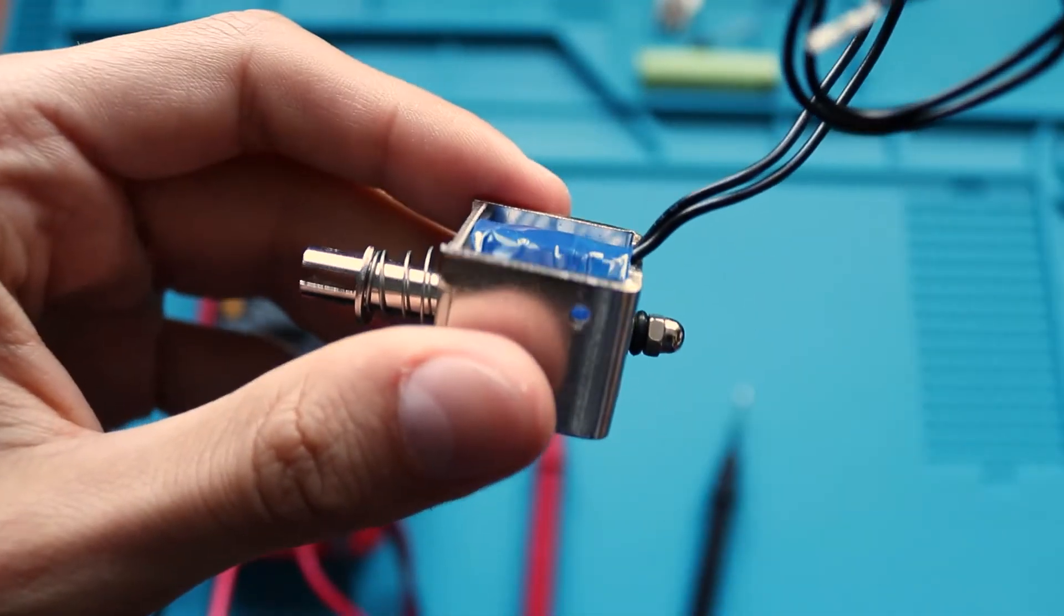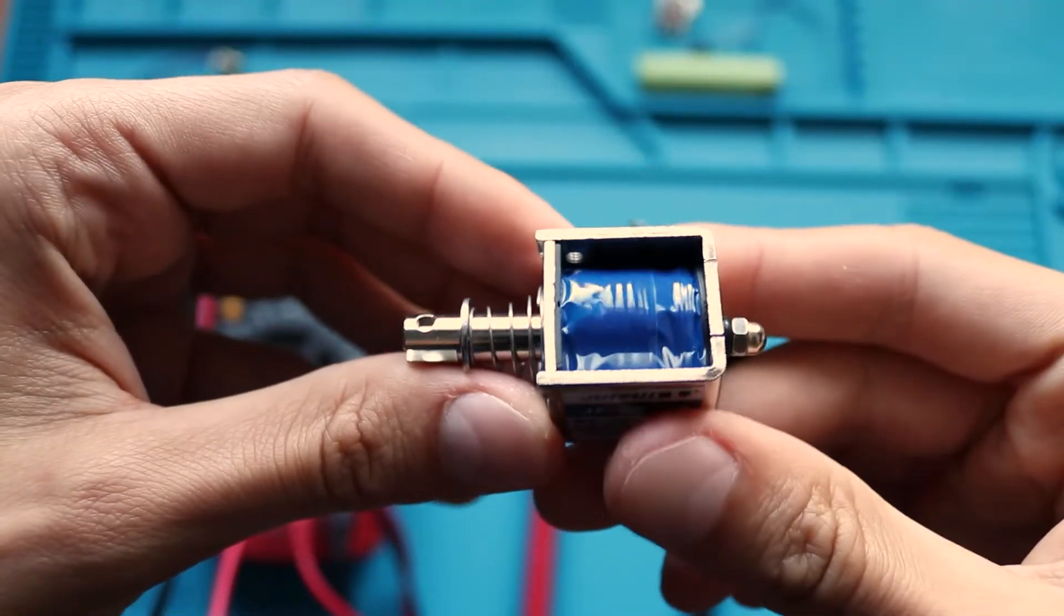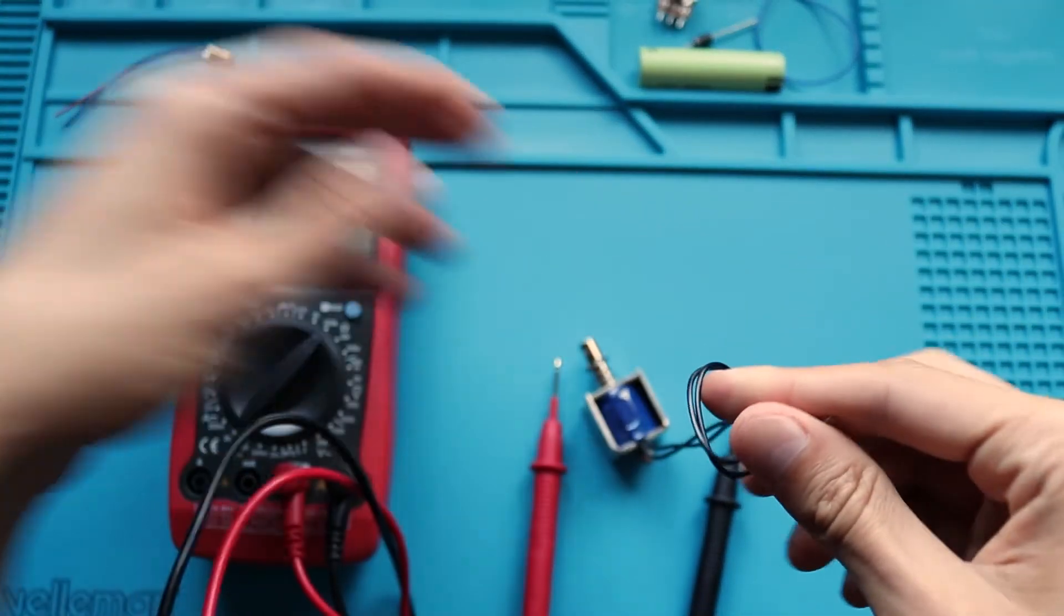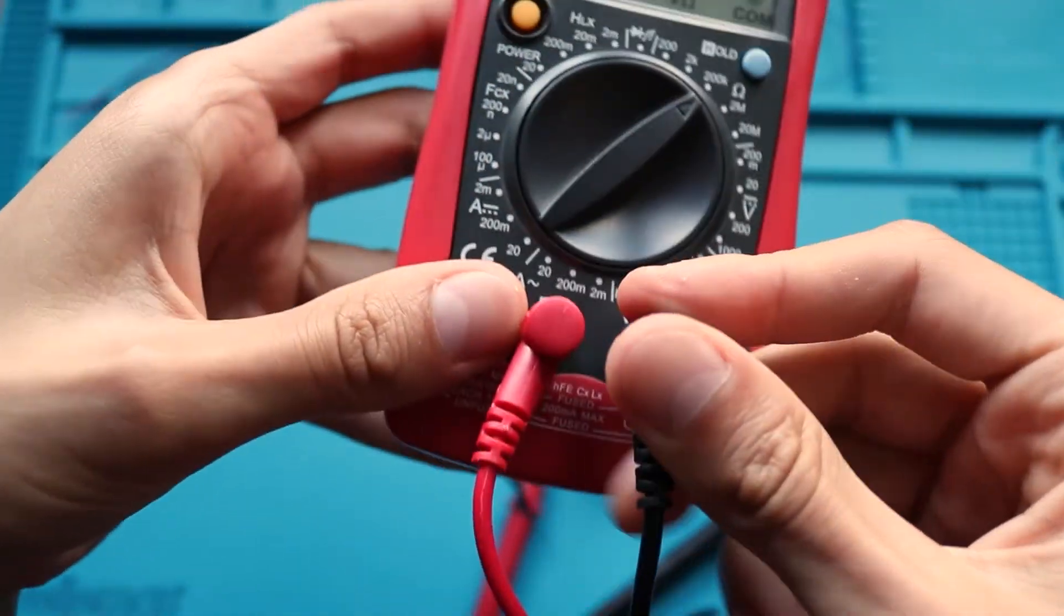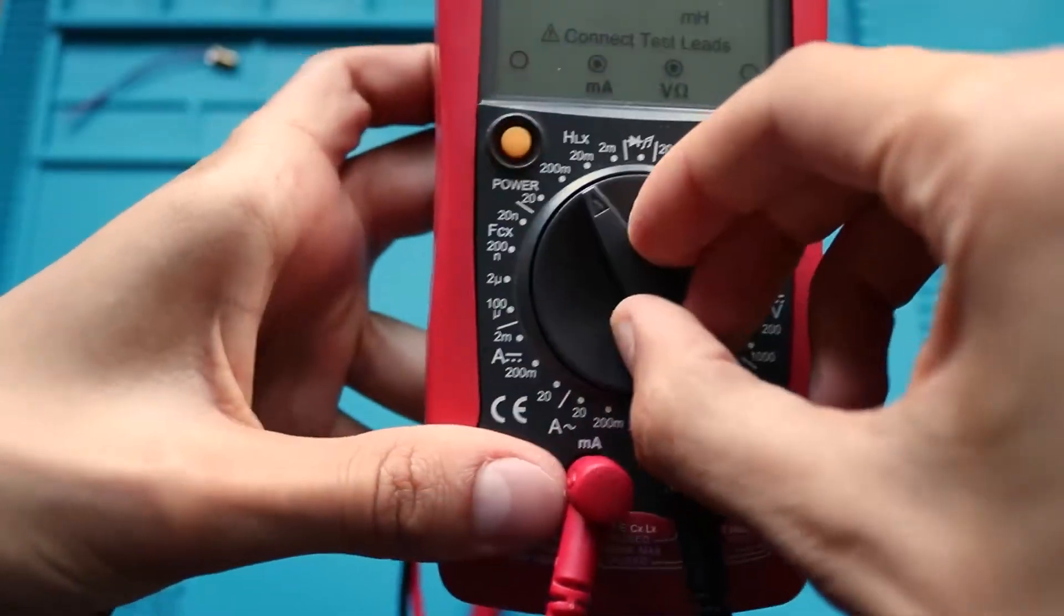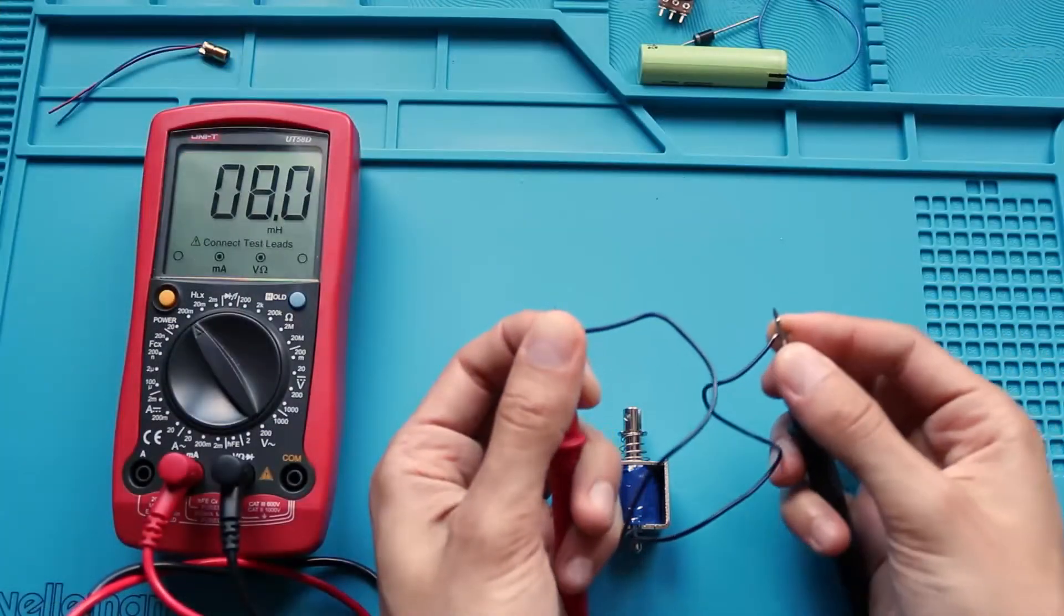Another thing we can measure is inductance. For example, here I have a solenoid. It consists of a huge amount of copper wire winds and basically represents a huge inductance. To measure it, put leads into a proper socket, change the measurement range and measure. And we got 8 mH.